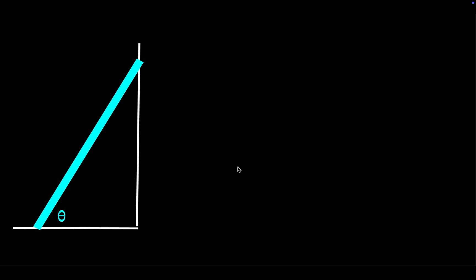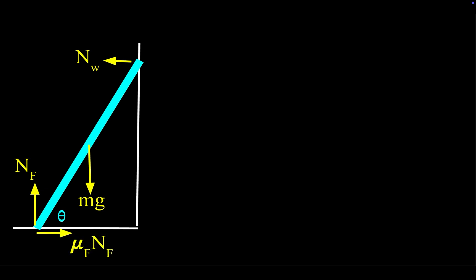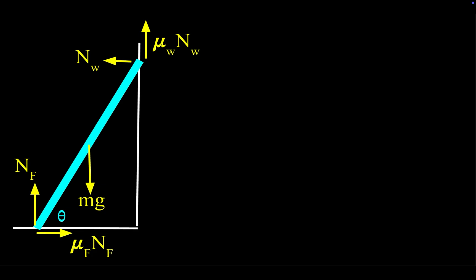The first thing we should do is draw the forces on this ladder. There would be the weight downward acting on the center of mass of the ladder, a normal force from where it touches the floor, and a normal force from where it touches the wall. The ladder would slide to the left if there wasn't a friction force on the floor pushing back to the right. At the minimum angle, we max out static friction, so it equals mu times N. And since the wall is rough, the friction force on the ladder from the wall would be upward, equal to mu_wall times N_wall.